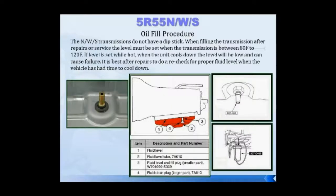When servicing this transmission, one of the primary things you need to do is check your oil level. Checking the oil level is done with a standpipe, similar to the 6L80 passenger car applications. Make sure the transmission fluid temperature is between 80 and 120 degrees Fahrenheit before popping the plug out of the standpipe. If the temperature is not in that range, you'll end up with an overfill or underfill condition. Use a scan tool, onboard data display, or a temp gun.